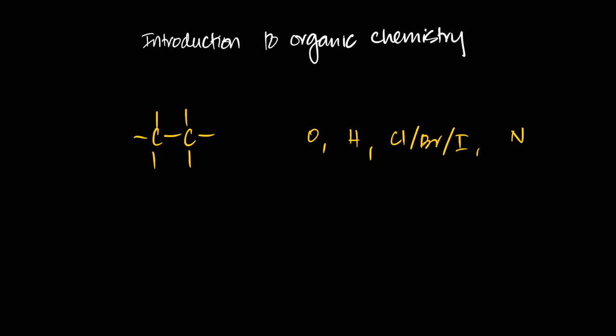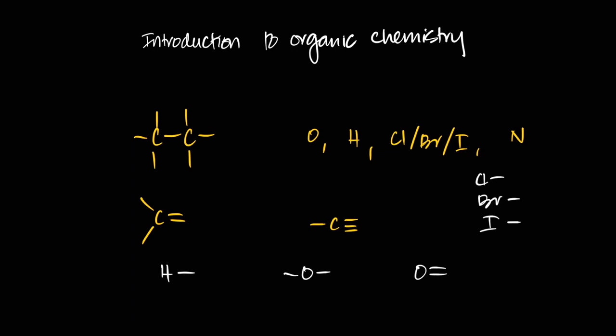You've got to treat this like Lego — these atoms are all your pieces of Lego. They can make different numbers of bonds. Carbon can make four single bonds, or in some molecules a double bond and two single bonds, or a triple bond and a single bond. Hydrogen just makes a single bond. Oxygen makes two single bonds or in one case a double bond. Halogens make single bonds because they're in group 17. Nitrogen makes triple bonds or three single bonds.